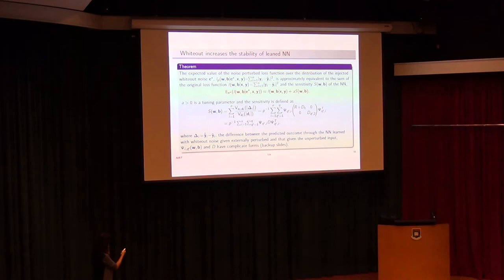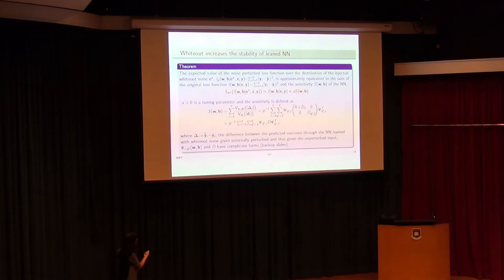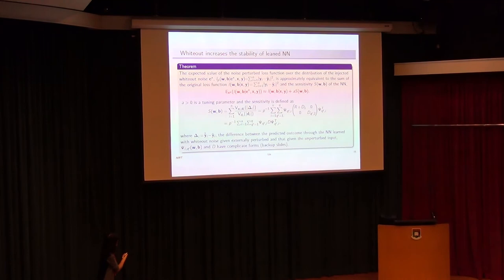Here is the key theorem from the paper. With respect to expectation over the distribution of the injected noise, we are minimizing the loss function on the original dataset plus the sensitivity of the learned model — where the parameters are weights w and biases b. WideOut allows you to simultaneously minimize both the loss function and the sensitivity to small perturbations in the input nodes, rather than just focusing on minimizing the loss function alone.